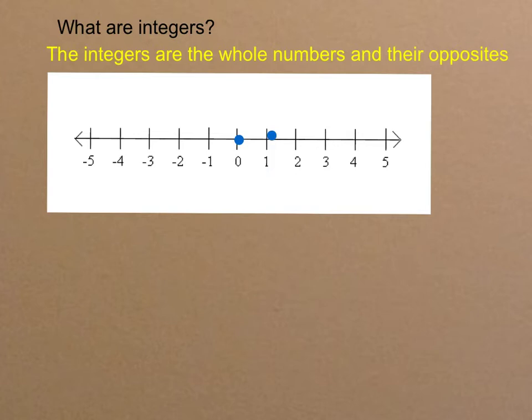1 is a whole number, so it's also an integer. And the opposite of 1 is negative 1, so negative 1 is also an integer.